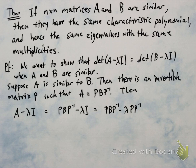And the identity matrix is just P times P inverse, and so we can write this as P B P inverse minus lambda P P inverse. And now we can factor out P from the right and from the left and get that this is P times the quantity B minus lambda I times P inverse.